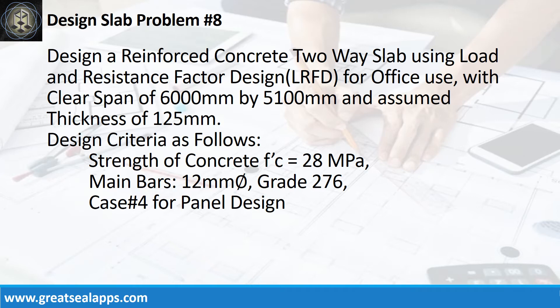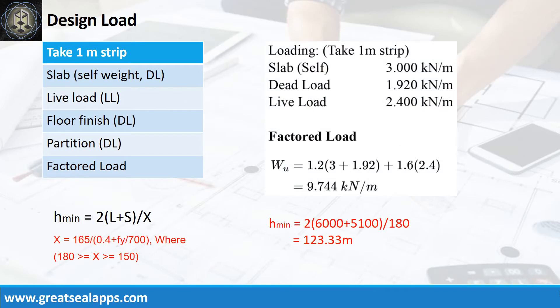Design criteria as follows: strength of concrete is 28 MPa; main bars are 12 mm bar, grade 276; case number 4 for panel design. The uniform load for a 125 mm thick slab is 3 kN/m. An office live load is 2.4 kN/m. Other dead load such as floor finish and partition is 1.92 kN/m, for a factored load of 9.744 kN/m.